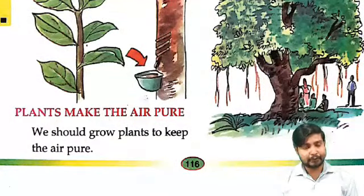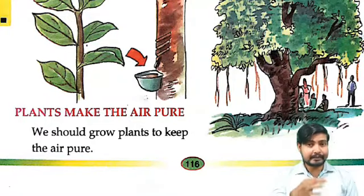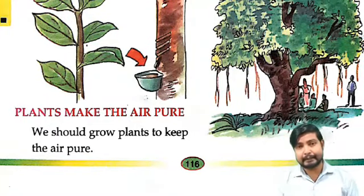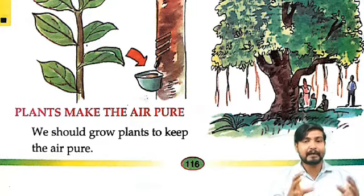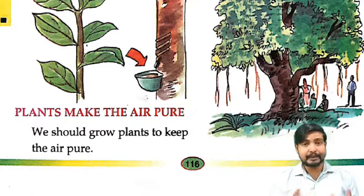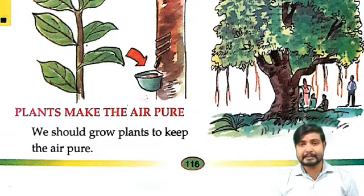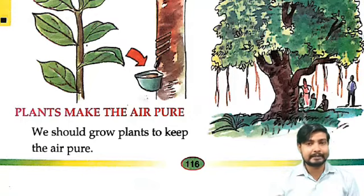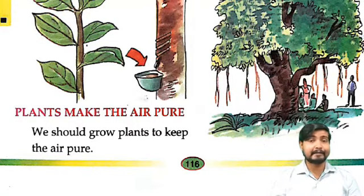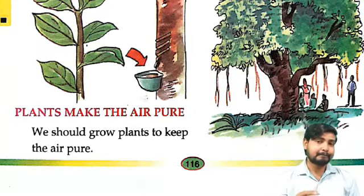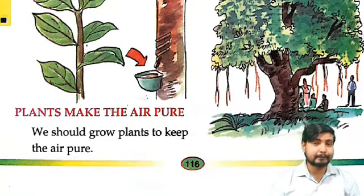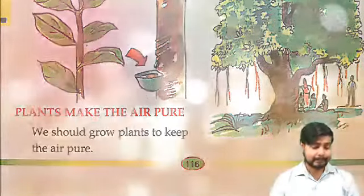Then plants make the air pure. Jo air hai, hum jo oxygen lete hain, usko bhi woh pure karta hai plant. We should grow plants to keep the air pure. Air ko pure karne ke liye hamein kya karna padega? Plants ko grow karna padega. Toh bachon, is chapter mein humne jaana hai ki jitne bhi sare plants hain woh hamare liye bahut anmol hain. Isi plants ki wajah se hum dharti pe zinda hain. Plants hamein oxygen deta hai, food deta hai. Lekin uske badle hum kya karte hain? Usi ped ko kaat dete hain. Toh hamein kya karna padega — ped ko bachaana padega. Jitna bhi ho sake, har din ek ek plant lagaana padega. Theek hai?